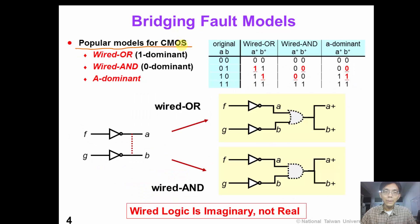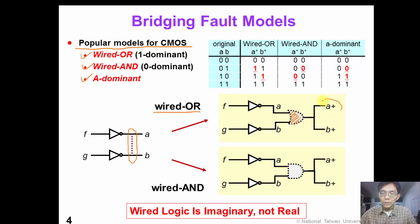There are three types of popular bridging fault models for CMOS technology: the wire-OR model, the wire-AND model, and the dominant model. In this picture, suppose that signals A and B have a bridging fault. If we model it as a wire-OR, we would insert an imaginary wire-OR logic gate. So the output A+ and B+ is the OR operation of the original A and B.